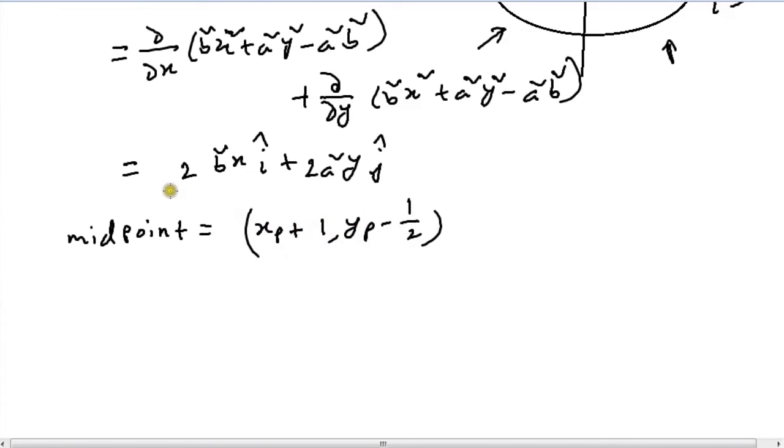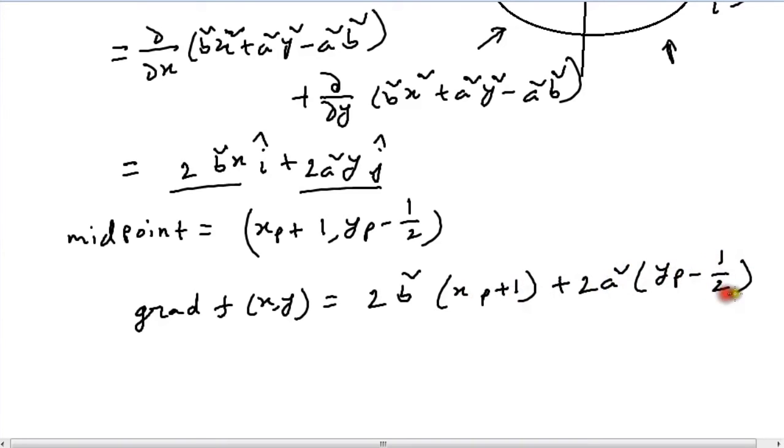So we can substitute these values into this equation to make grad f equal to 2b²(xp + 1)î + 2a²(yp - 1/2)ĵ.